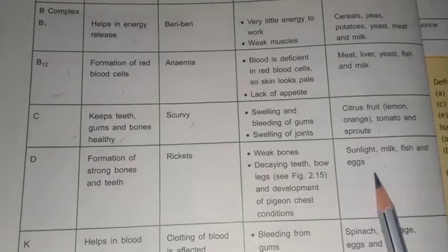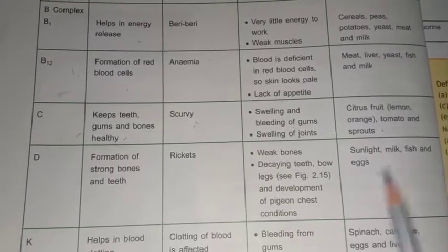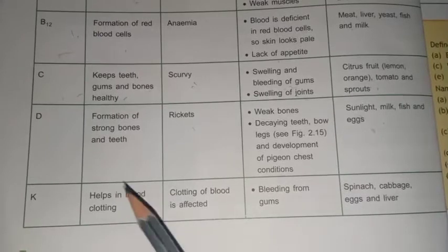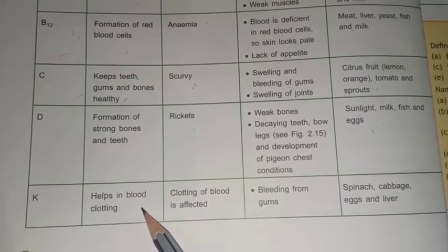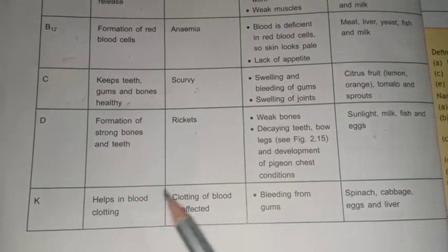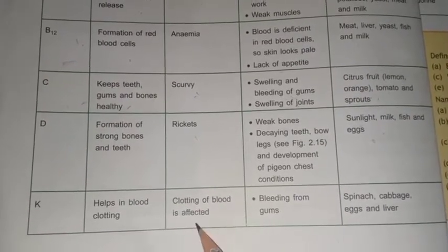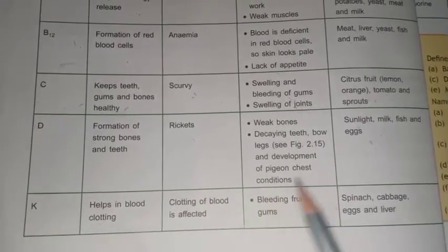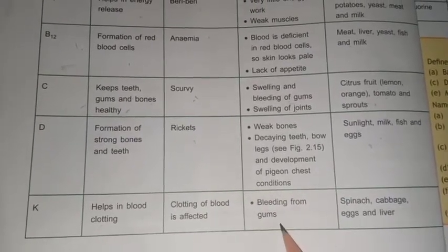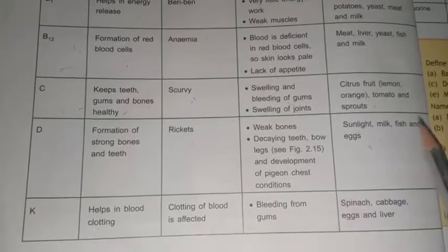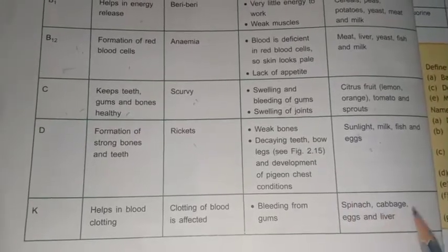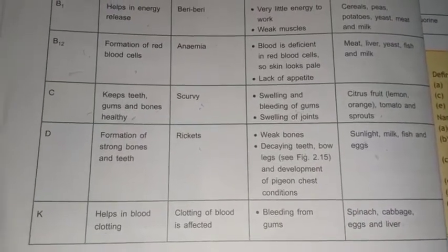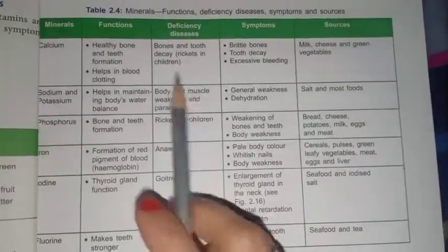Next we have Vitamin K. Its function is to help in the clotting of blood. If you have a deficiency of Vitamin K, blood clotting is affected. Its symptoms are bleeding from the gums. Its sources are spinach, cabbage, eggs, and liver, etc.